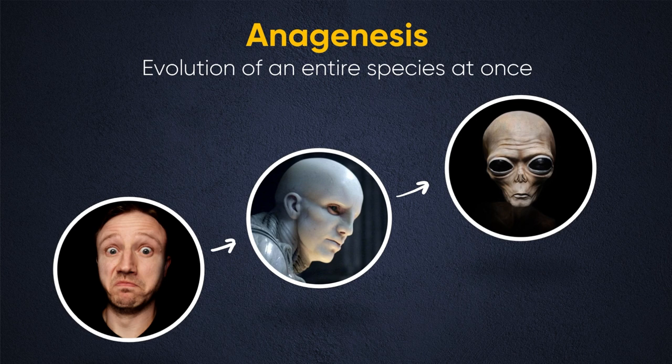The entire species, the entire population, is evolving at once into new things that replace the old things. The guy in the middle is from the movie Prometheus — and if you've seen that movie, you know that humans don't evolve into the Prometheus aliens; humans evolved from them. But because that movie screws up evolutionary biology so badly, I thought it'd be fun to make a video about evolution that screws up the plot of Prometheus. The guy on top is one of the gray aliens from UFO culture. But this is an example of what anagenesis might look like in the future of human beings.